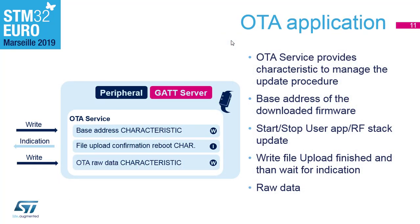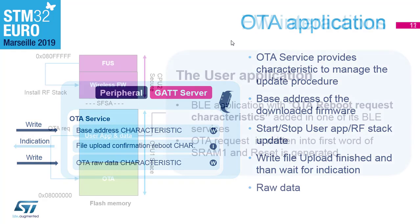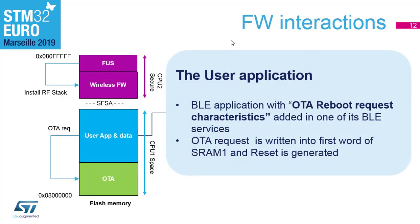OTA uses a Bluetooth proprietary service with three characteristics: one for defining the base address where data will be flashed, one for exchanging the raw binary data, and once all data has been transferred, an indication is sent back to the OTA client confirming the upload finished successfully.